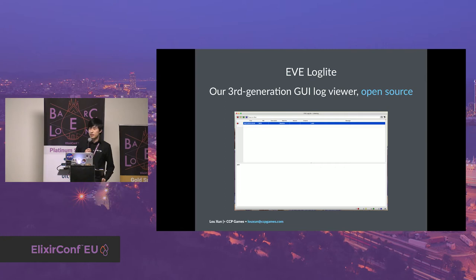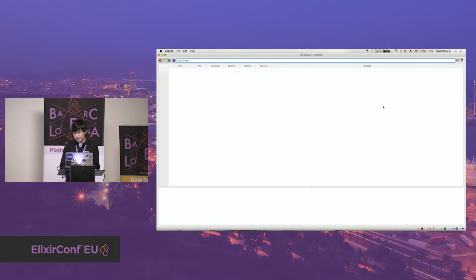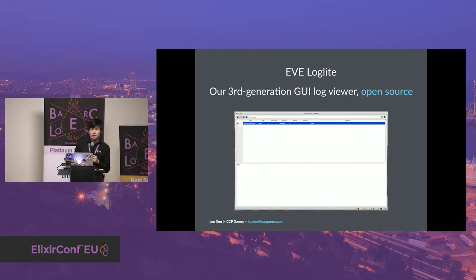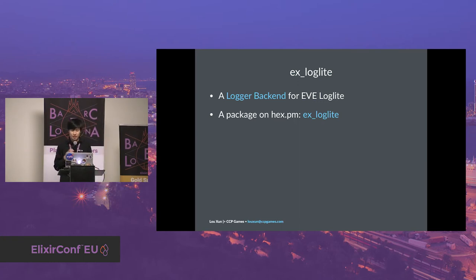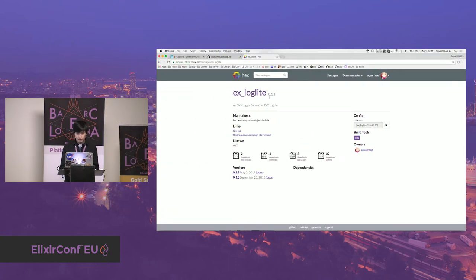EVE LogLite is an open source GUI log viewer — actually our third generation. It shows all the messages and you can search by whatever you want. It also has fancy features like filters by channels. Basically it's just a way to view logs in a GUI. Because I use EVE LogLite a lot at my day job, I was thinking about how we could use it in Elixir development as well. That's why I came up with ExLogLite, which is a logger backend for EVE LogLite, also available as a package on Hex.